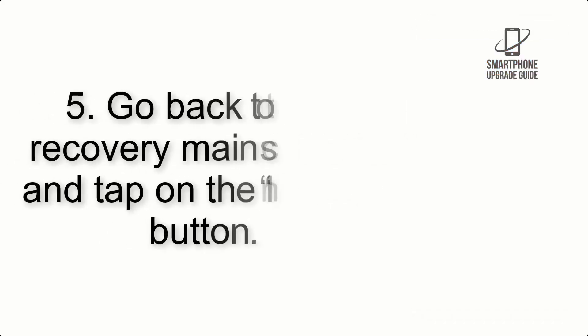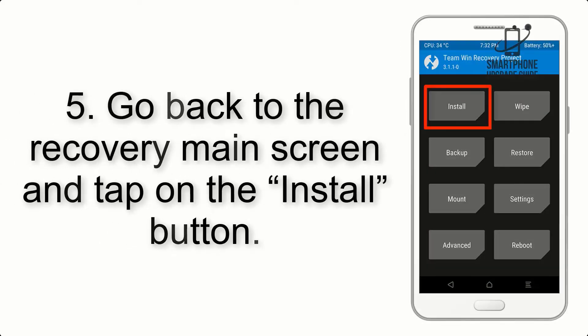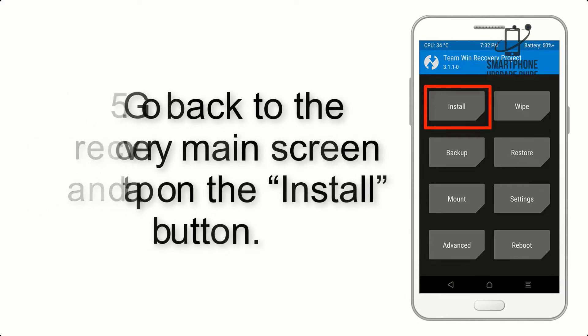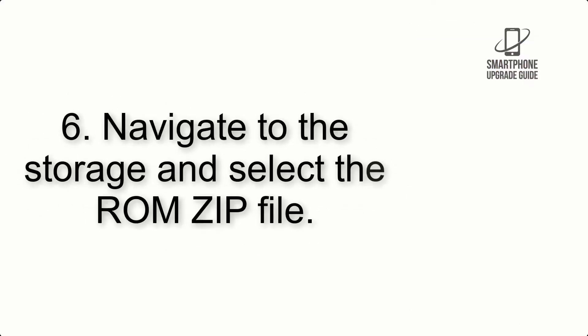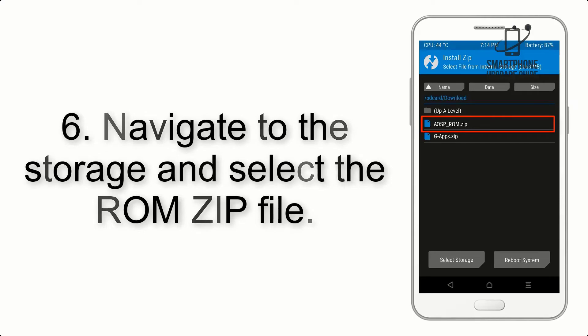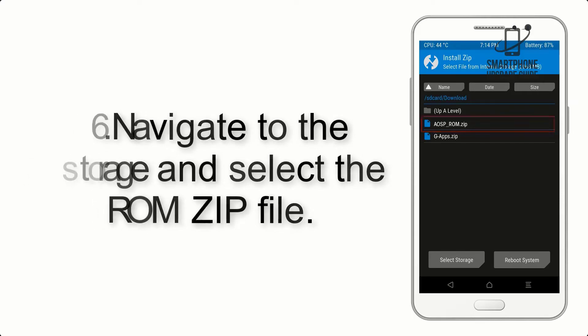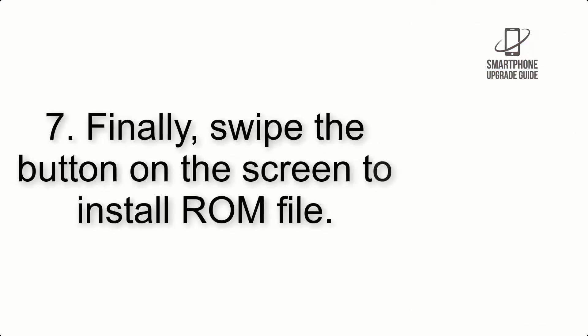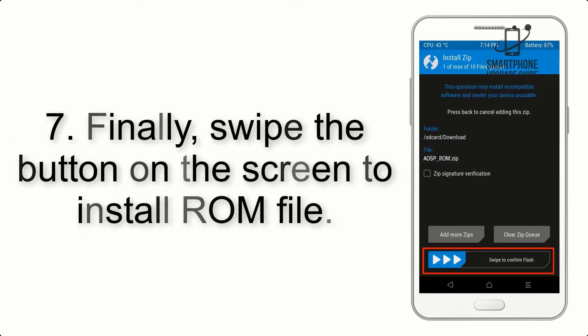Step 4: swipe the button to wipe the device. Step 5: go back to the recovery main screen and tap on the Install button. Step 6: navigate to the storage and select the ROM zip file.